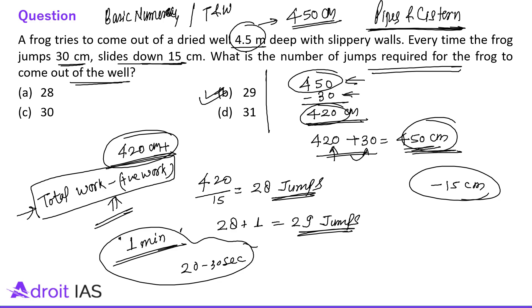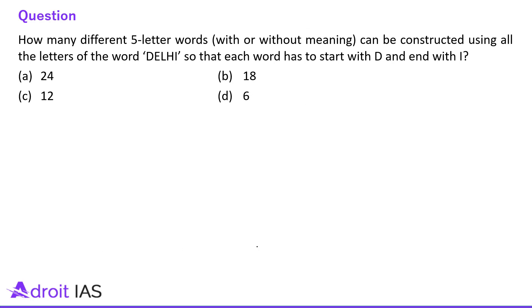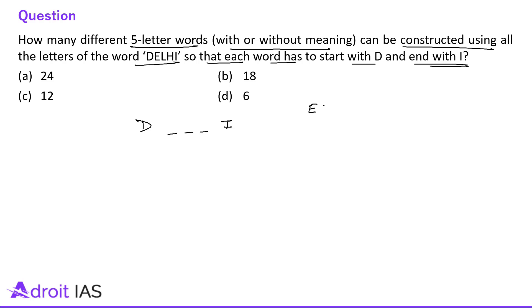Now the next question: how many different five-letter words, with or without meaning, can be constructed using all the letters of the word DAILY, such that each word starts with D and ends with I? This question belongs to permutation and combination.